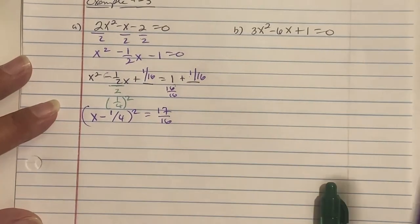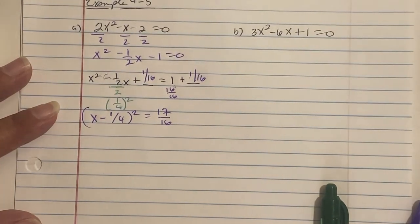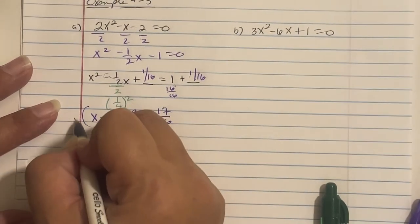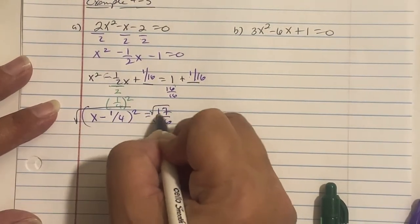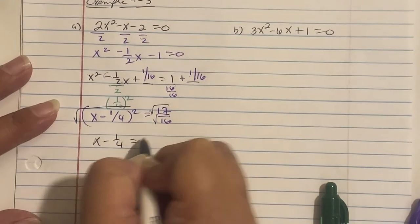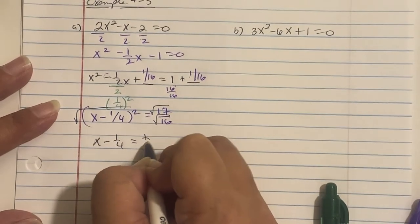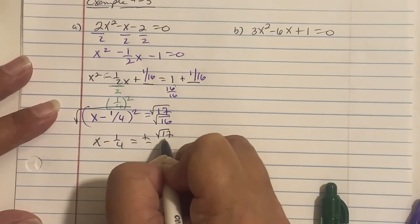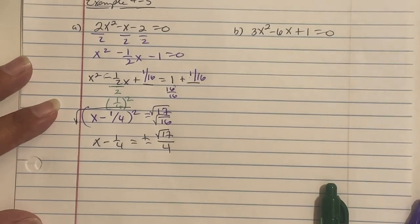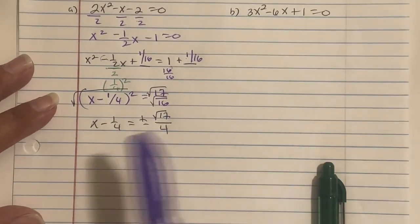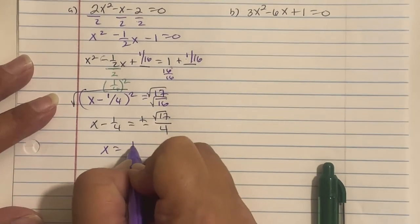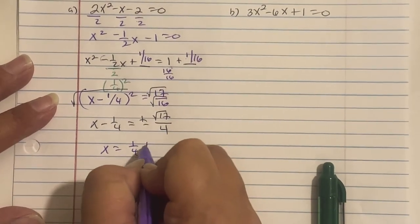Because it's a power of 2, we use the square root property — taking the square root of everything. We get x minus one-fourth equals plus or minus the square root of 17 over 4, since the square root of 16 is 4. Adding one-fourth over: x equals one-fourth plus or minus the square root of 17 over 4.